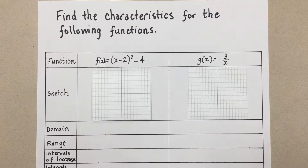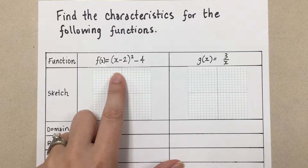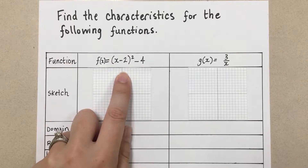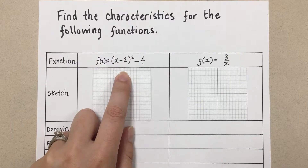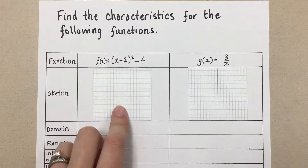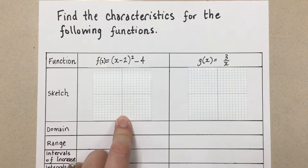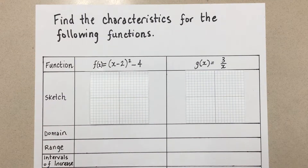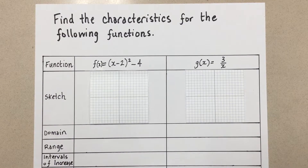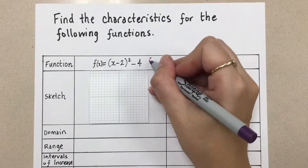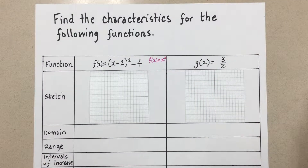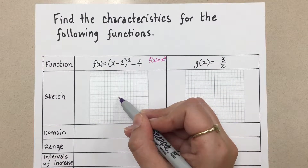The first one I want to look at is f(x) = (x - 2)² - 4. This is the equation for a quadratic function, so in other words it's a parabola. I'm going to sketch it first based on the transformations from the original parent function f(x) = x². We know that's an open-up parabola with a vertex at the origin (0, 0).